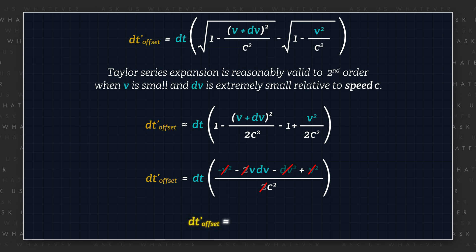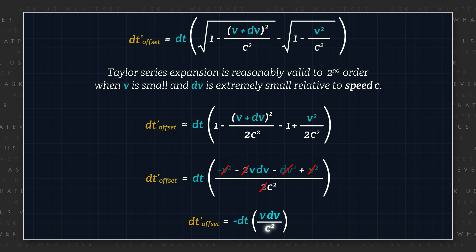This allows us to effectively ignore the DV squared over 2 times C squared term in the approximation. Therefore, the clock offset approximately equals negative DT times V times DV over C squared.